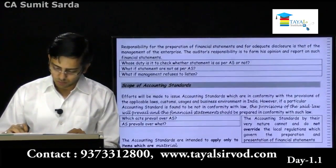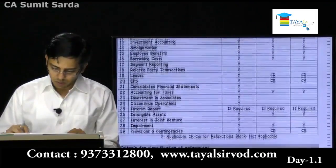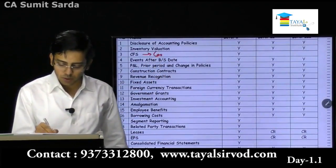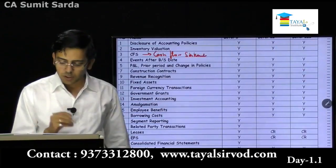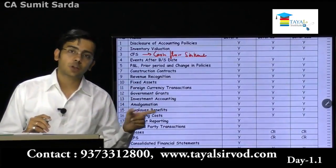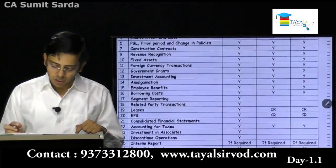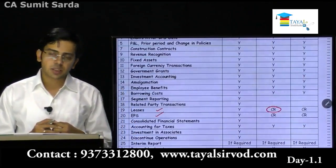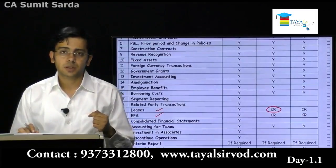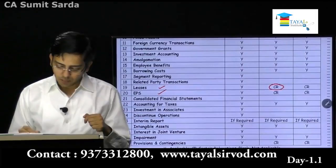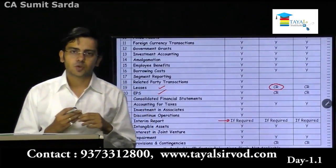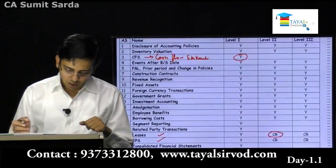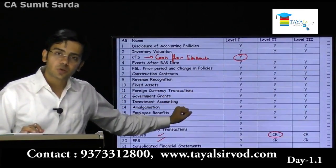If you open the notes, there is a complete list showing which standards are applicable to whom. CFS — cash flow statement — is not required to be presented by level 2 and level 3; only level 1 is required to present it. CR means certain relaxations have been given in case of leases and earnings per share. Under leases, finance lease is not required to be presented by level 2 and level 3. Level 1 does not have any such exemptions. If required to present interim reports, you must follow that standard.